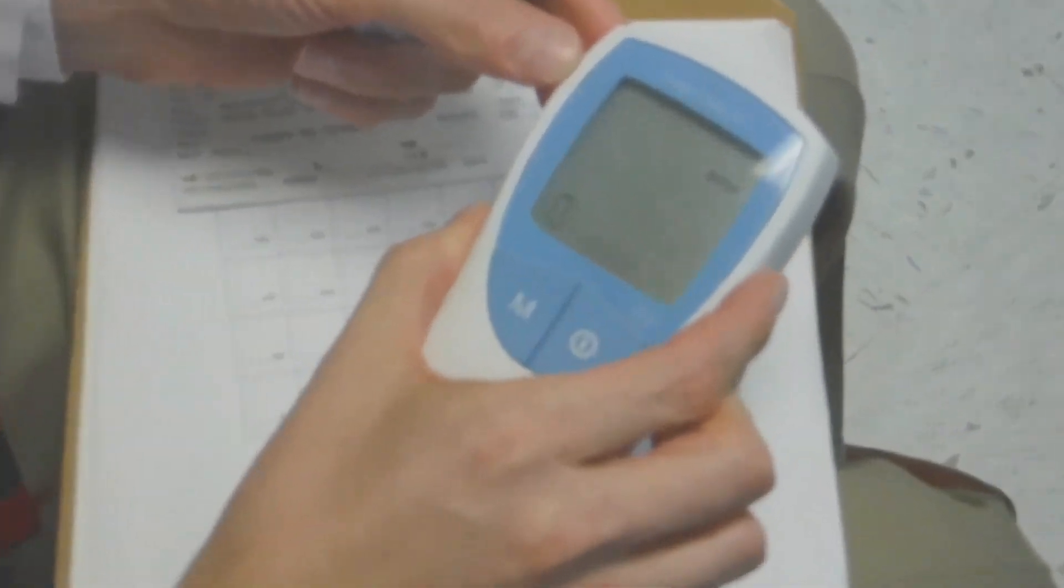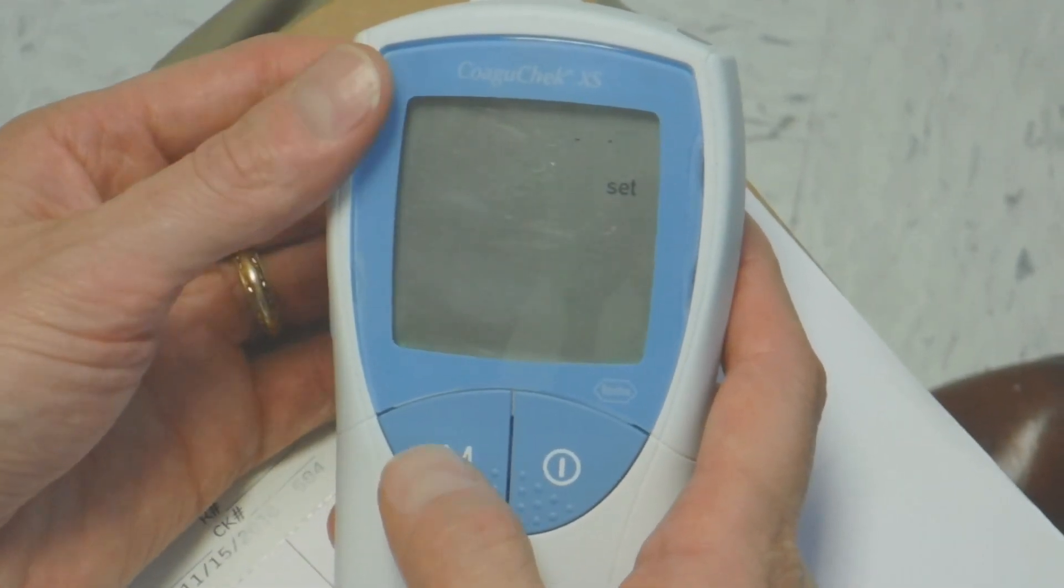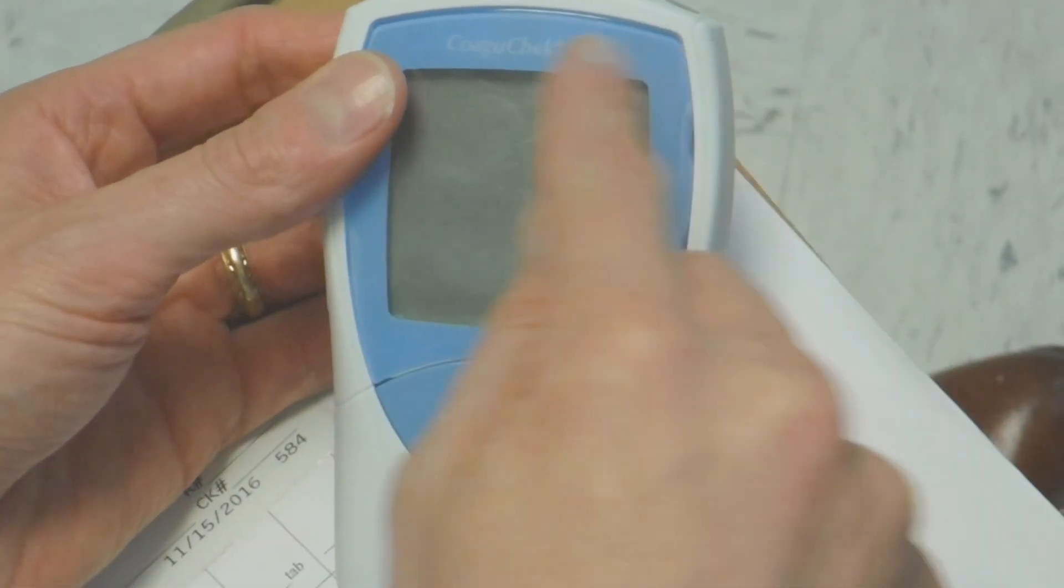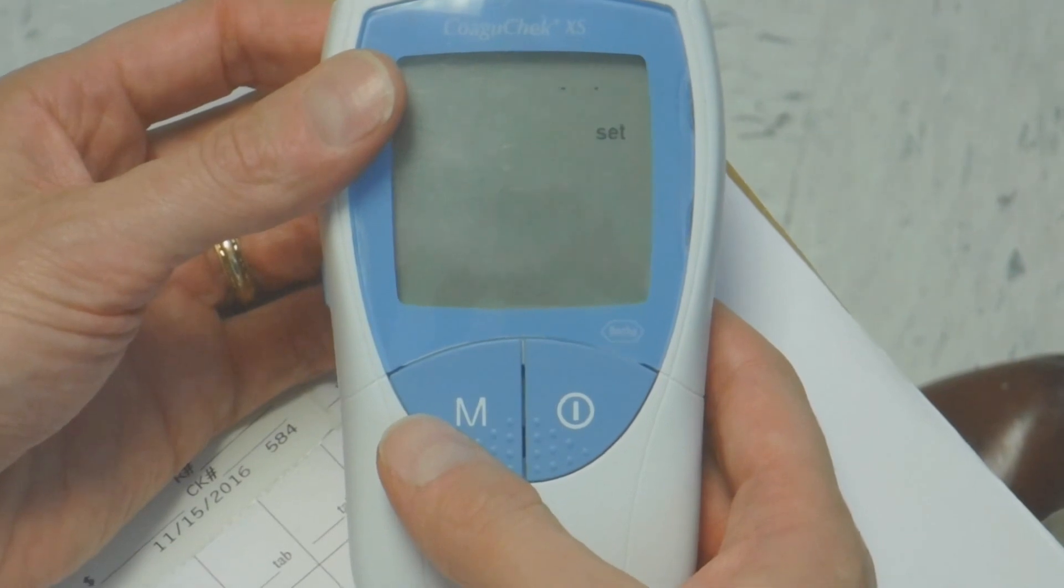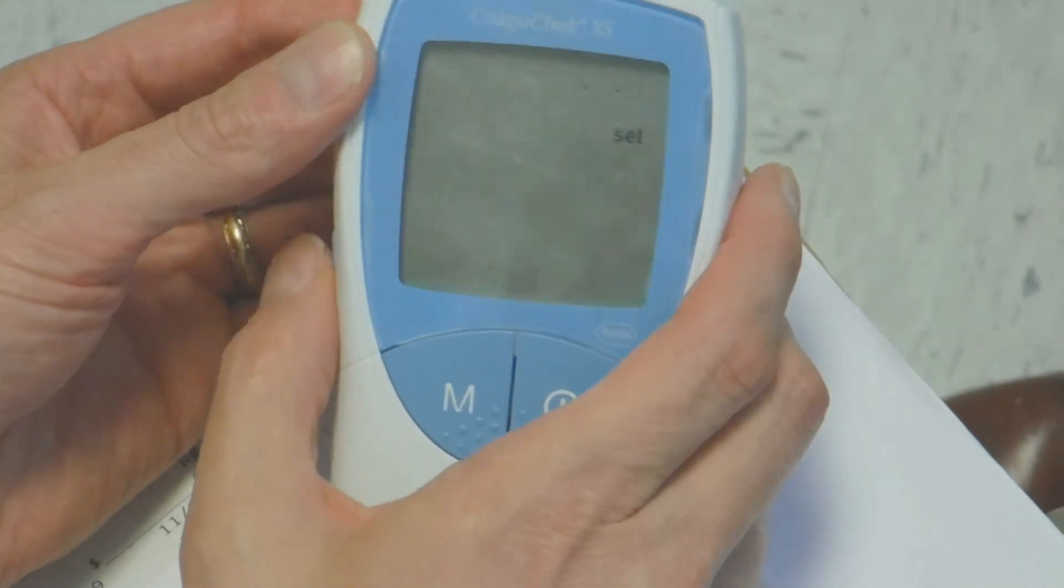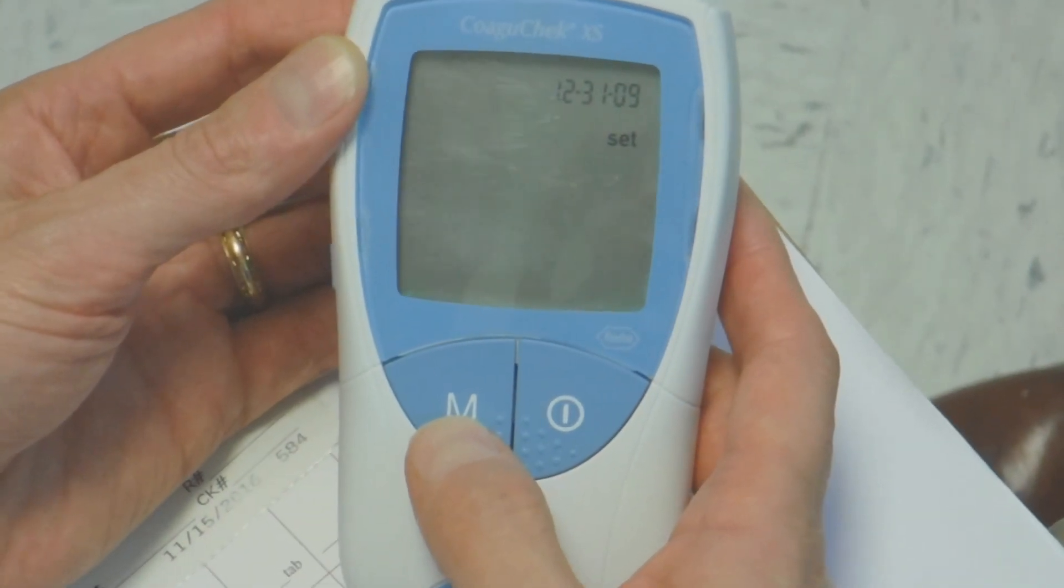Do we need to put the date and time in there? Alright, so this is giving you the option as far as date, month, year, or month, date, year. Yeah, month, date, year. Works for me.